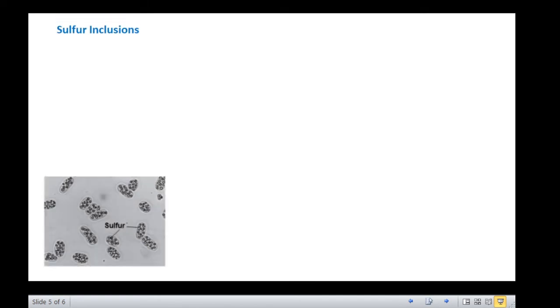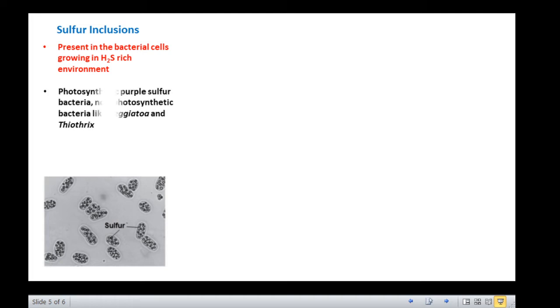Sulfur granules are also storage granules. Sulfur granules are present in bacterial cells growing in H2S rich environment such as photosynthetic purple sulfur bacteria and filamentous non-photosynthetic bacteria like Beggiatoa and Thiothrix. Stored sulfur in these granules is oxidized to sulfate when the sulfide in the medium has been completely utilized.